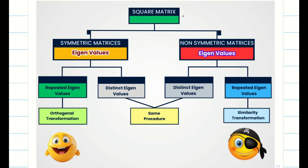First of all, we have to take the square matrix. We are dealing mostly with 3×3. Later, I will post how to solve 2×2 — that is going to be very easy. The matrices are classified into two types according to our problem. If A equals A transpose, then it is a symmetric matrix. If A is not equal to A transpose, then it is a non-symmetric matrix.